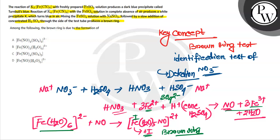The brown ring complex formula is [FeSO4(H2O)5NO]. This is the brown ring complex.